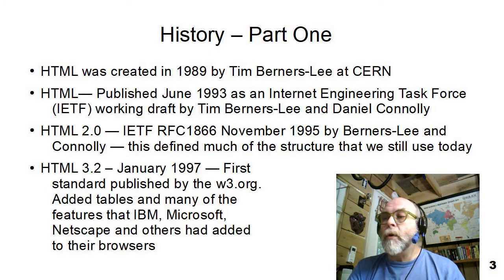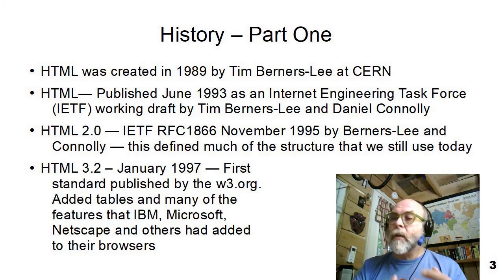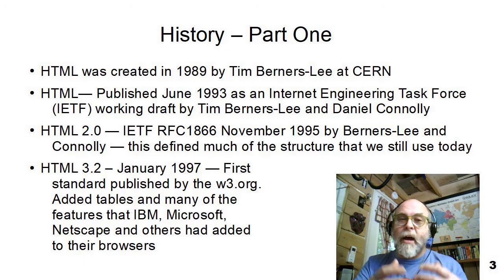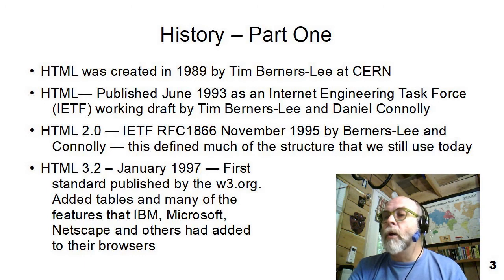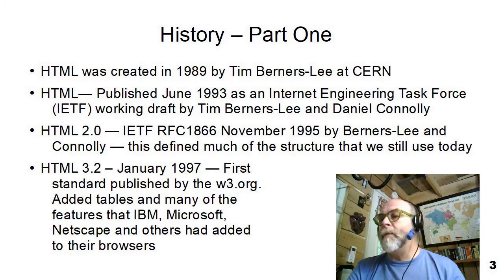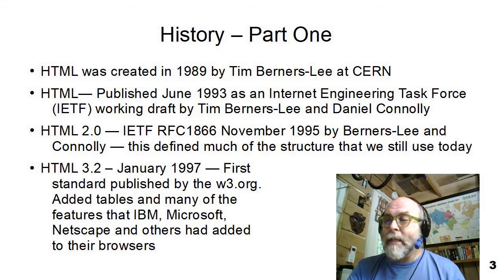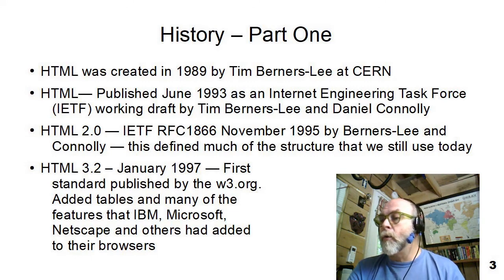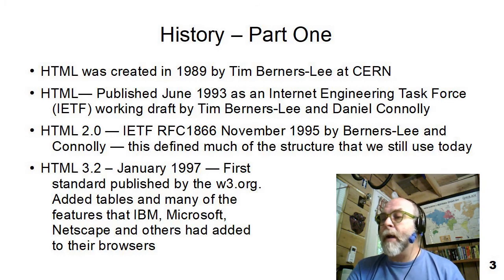HTML 2, which is a complete rewrite and cleanup of the code, was published by the IETF in 1995, and it defines very much of the structure we still use today. There was a structure called HTML 3.2, which came out in 1997, and was the first standard published by the W3.org group. It added tables and a whole bunch of features that IBM, Microsoft, and Netscape wanted in the standard.